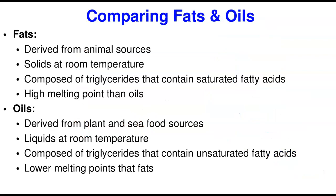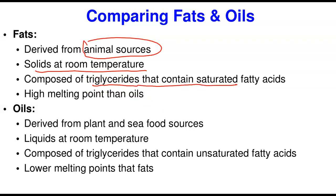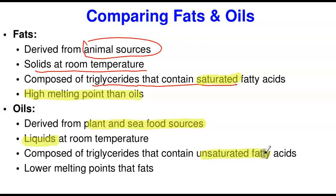Comparing fats and oils: fats are derived from animal sources and are solid at room temperature. They are composed of triglycerides that contain mainly saturated fatty acids. Because they have more saturated fatty acid, they have a higher melting point than oils. On the other hand, oils are derived from plants and seafood sources. They are liquid at room temperature and are composed mainly of unsaturated fatty acids. Because they have many unsaturated fatty acids, their melting point is lower than that of fats.